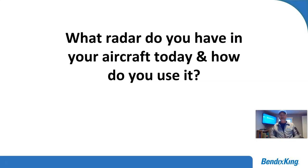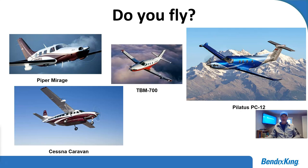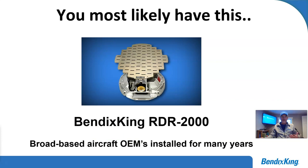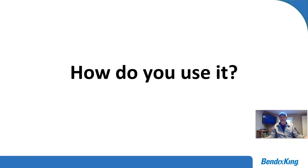Here's the big question: what radar do you have today and how do you use it? A lot of people really can't answer that question. Now if you're flying something like the Piper Mirage, TBM 700, PC-12, or the Cessna Caravan, you most likely are flying with our radar, the RDR-2000. The RDR-2000 was broad-base installed by OEMs for many many years, so there's a really good chance that if you have that wing pod mounted radar, you have an RDR-2000 sitting out there.